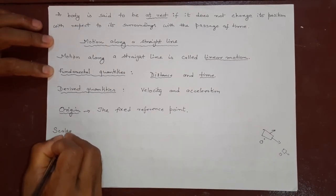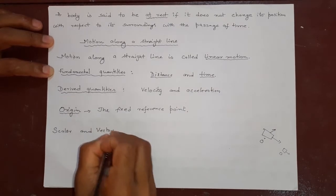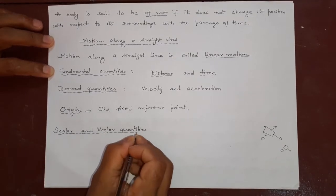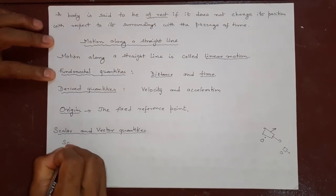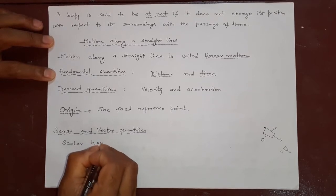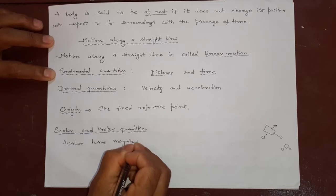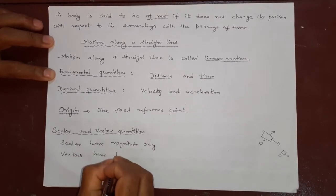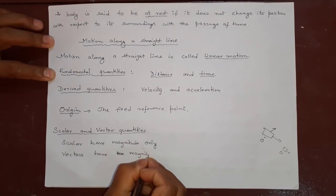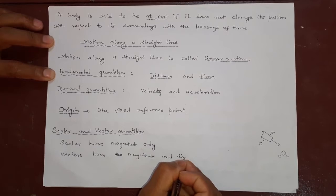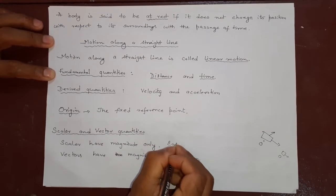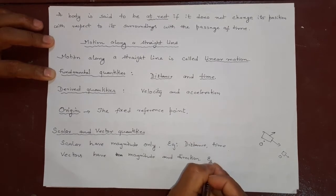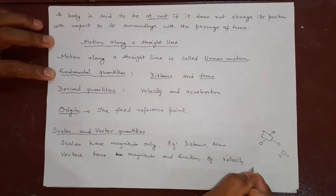Now comes scalar and vector quantities. When we are dealing with quantities like distance, time, velocity, and acceleration, some are scalar and some are vector. Scalar quantities have magnitude only. Vectors have magnitude and direction. Examples of scalars: distance, time. Examples of vectors: velocity, displacement.